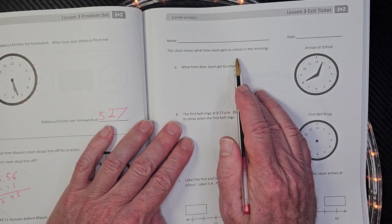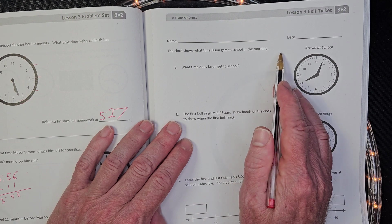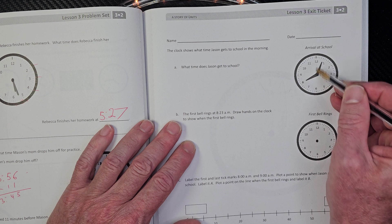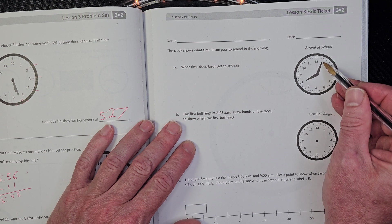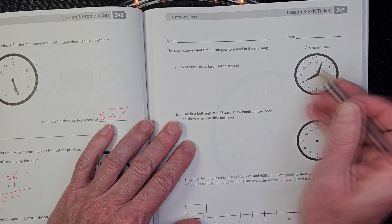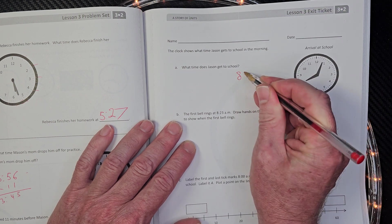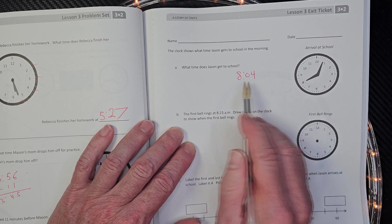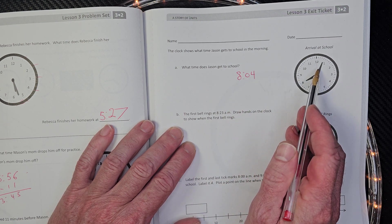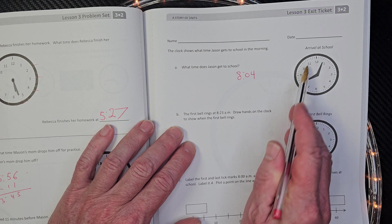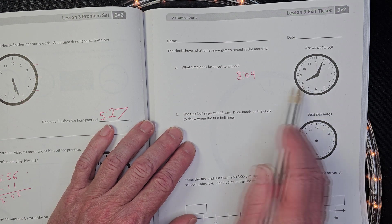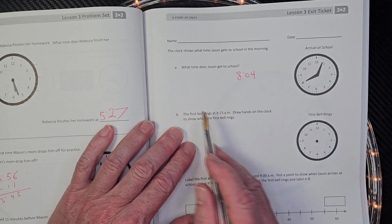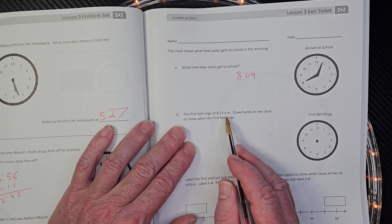The clocks show what time Jason gets to school in the morning. All right. What time does Jason get to school? Remember if this was eight o'clock, this would be straight up. So it is eight o'clock. It's eight, one, two, three, four. So he gets to school at eight O four. I'm thinking that Jason is getting to school late, getting there a little tardy. I bet he has to be school at eight or seven 30. So Jason, how can we make that work? All right. We want to get you there on time.